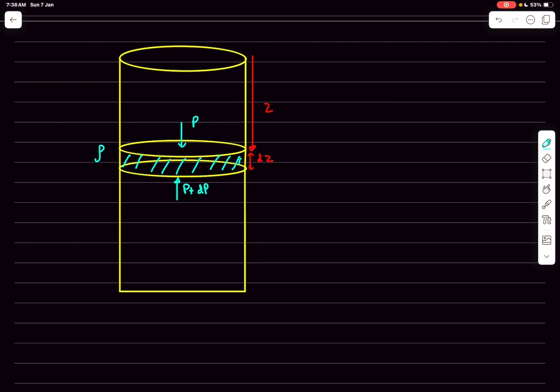We also have to mark the weight of the fluid, so I'm going to mark it a little sideways. Then we have the weight which I'm going to write as w for the moment. Now as the entire fluid is in equilibrium we can balance the forces, so we can write dp multiplied by A equals w.